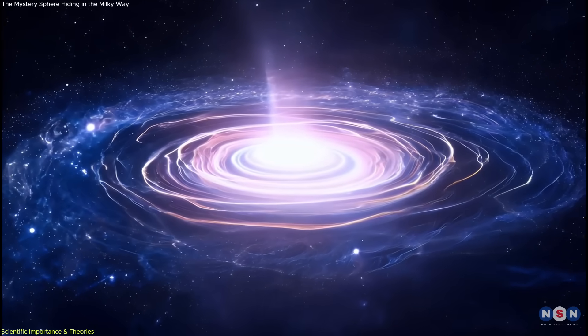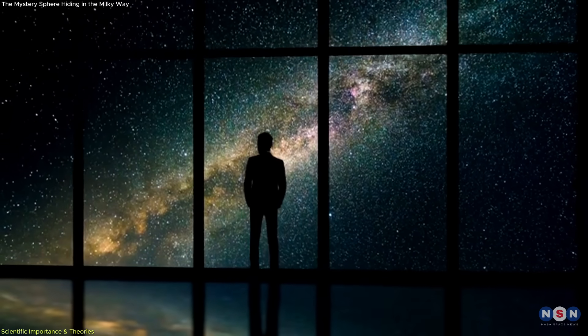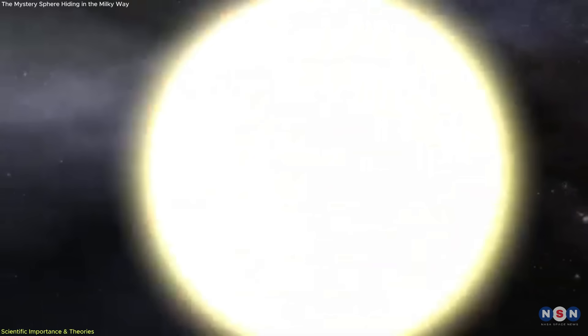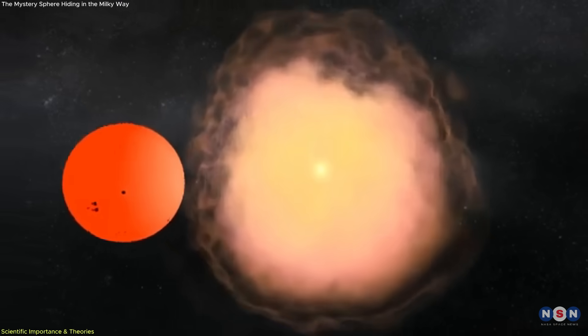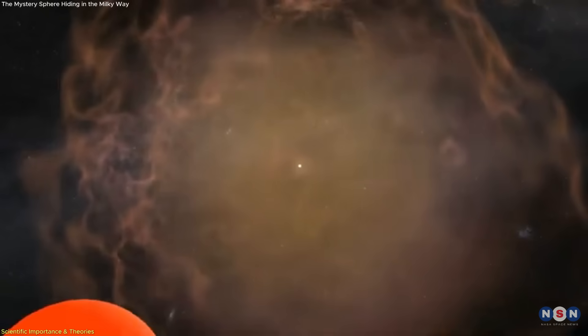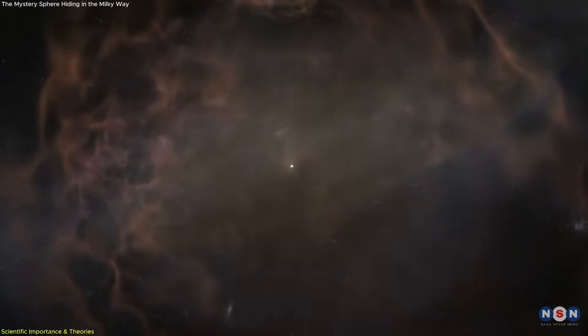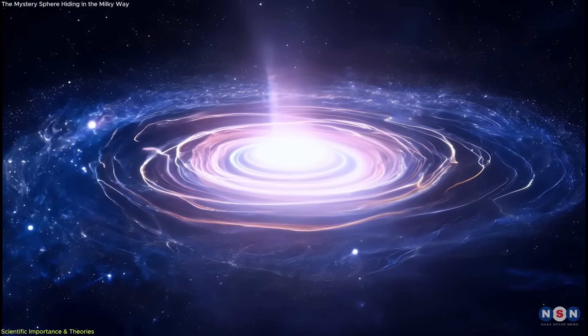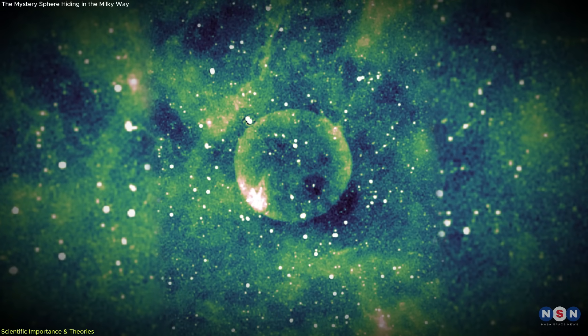The likely cause? Many astronomers point to a Type Ia supernova, the result of a white dwarf star in a binary system pulling too much material from its partner, reaching a tipping point, and erupting in a thermonuclear blast. These explosions can be highly symmetrical, but they also typically shine brightly in X-rays, which Teleos does not.